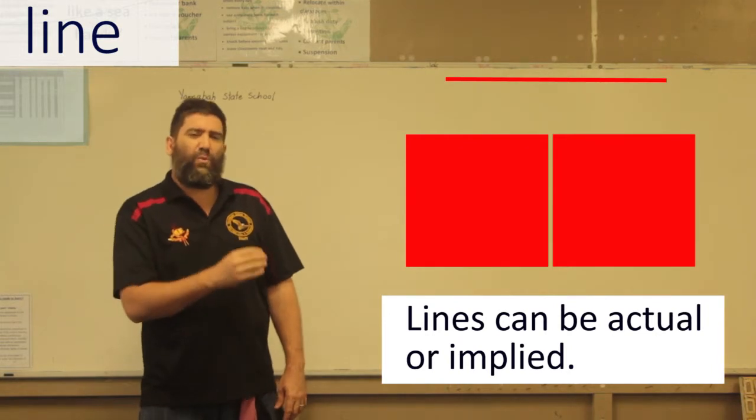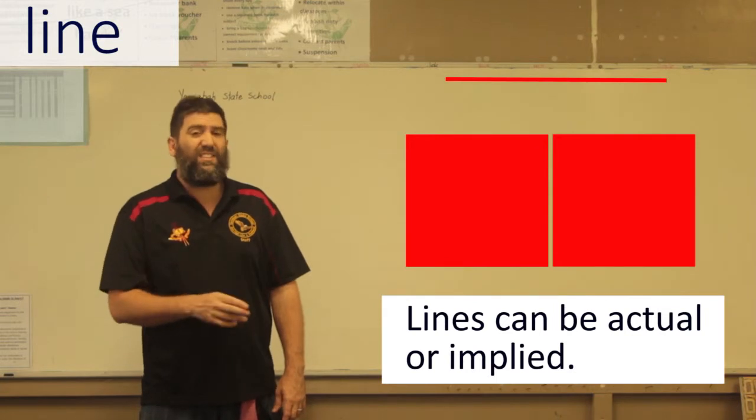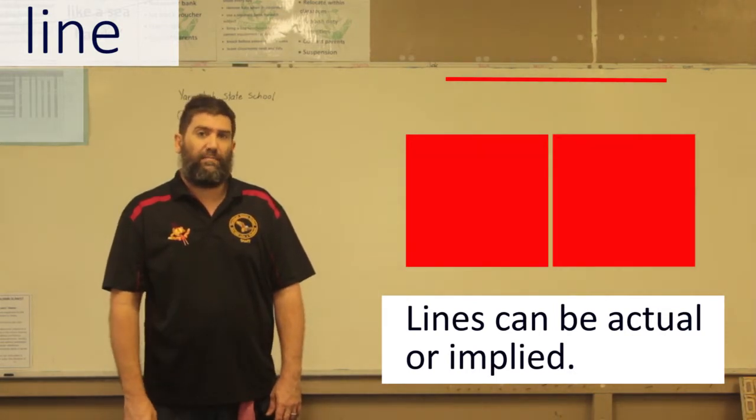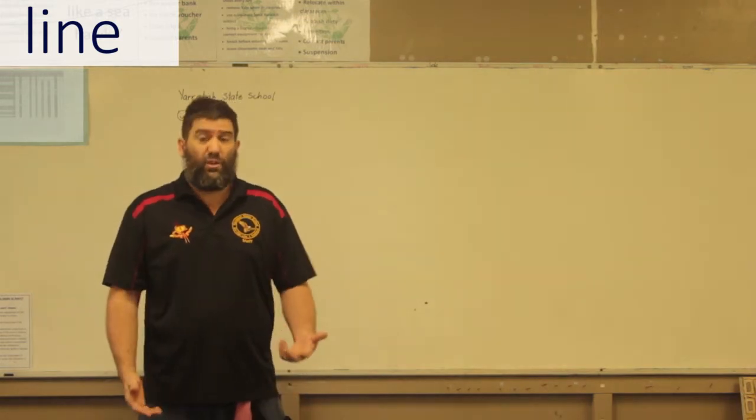The space between them is making a line. There isn't actually a line there, but the space is implying a line. And now let's go and have a look at some examples of artwork using lines.